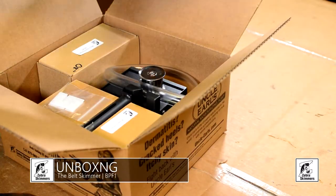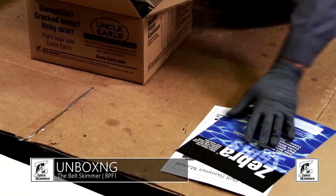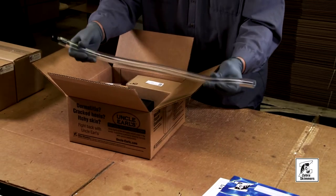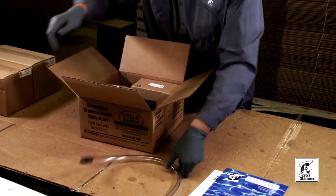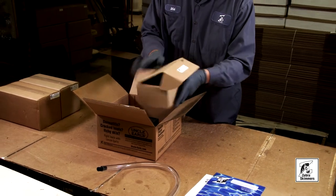You have your paperwork, your manual - go ahead and take that out. You also get your discharge hose for your Belt Skimmer. Your Belt Box - this is how your belt comes.